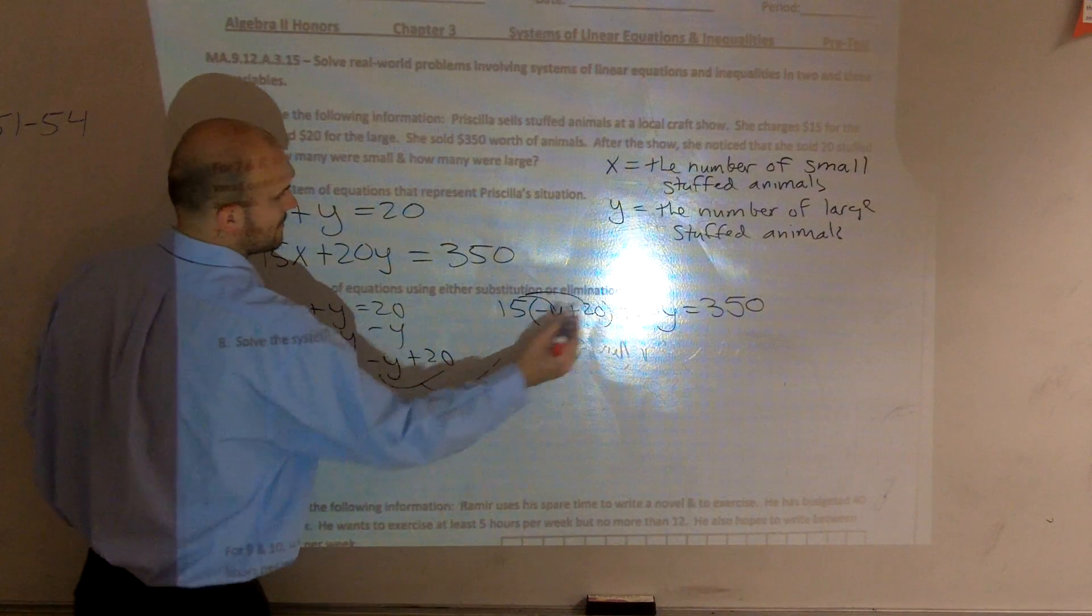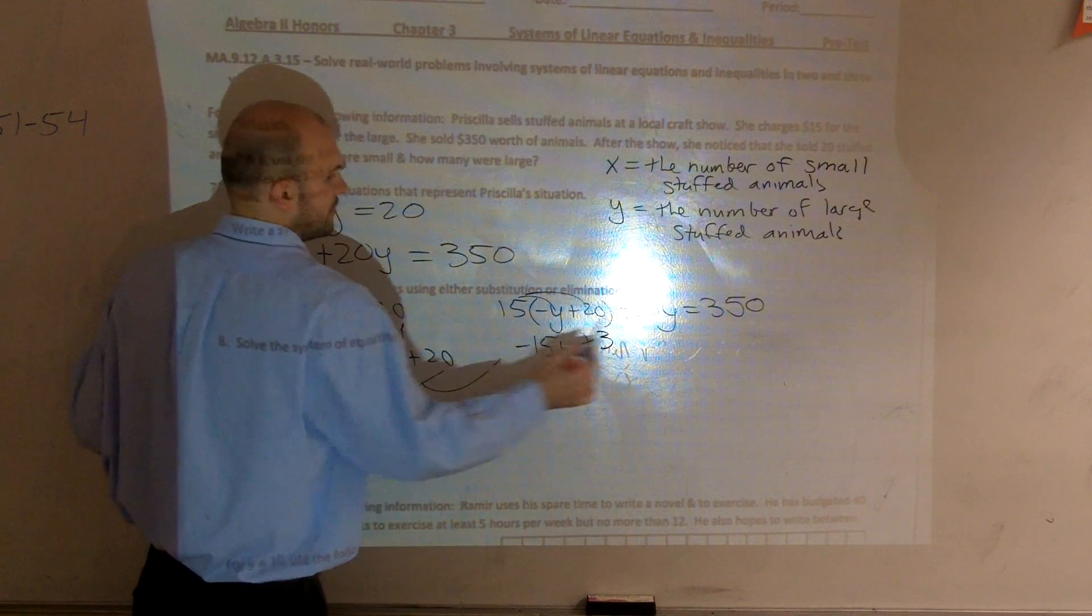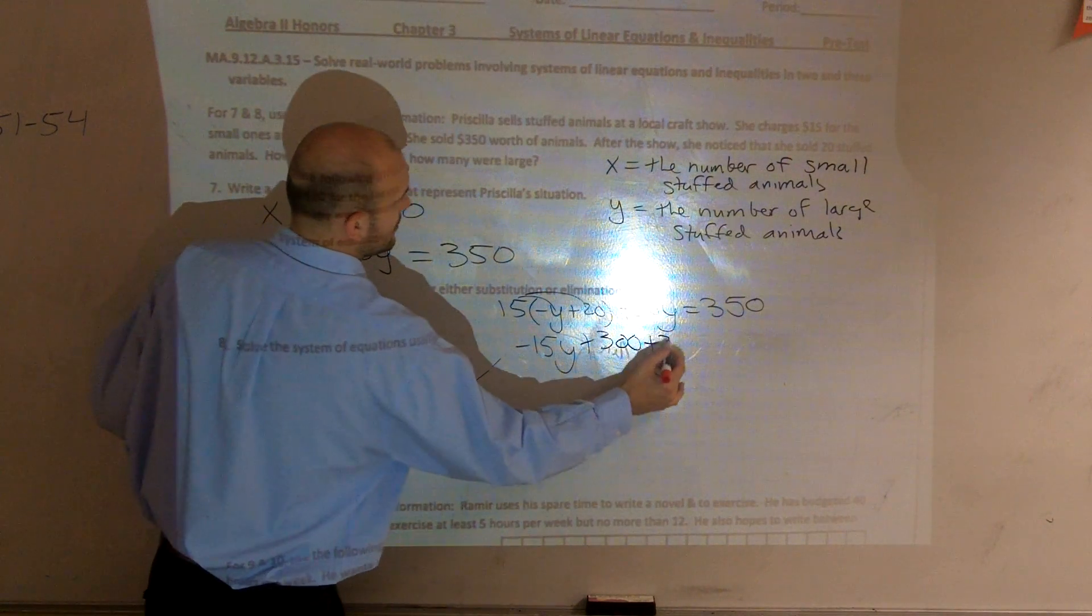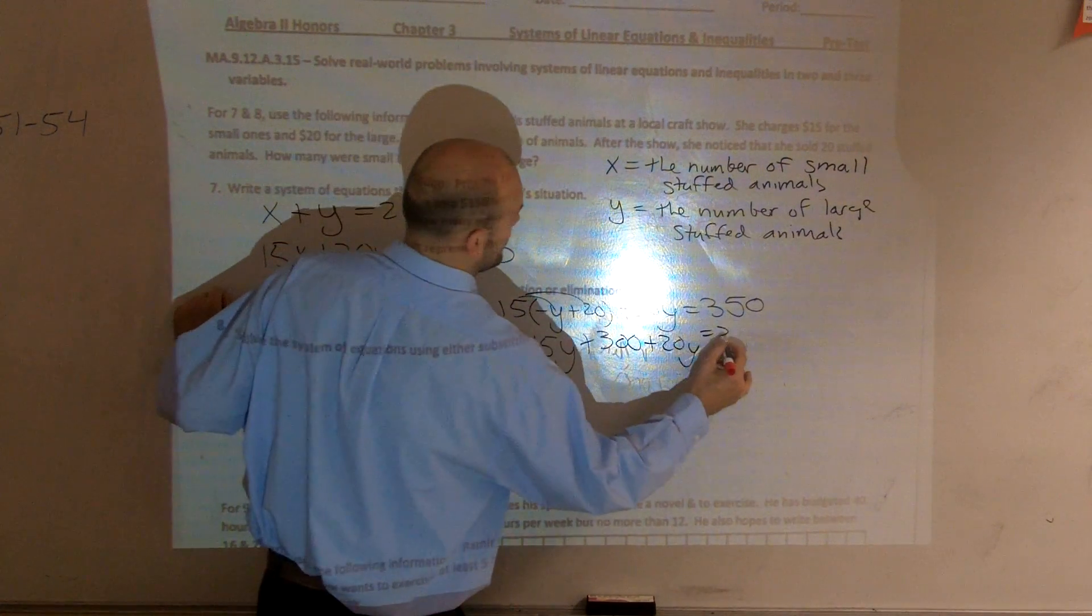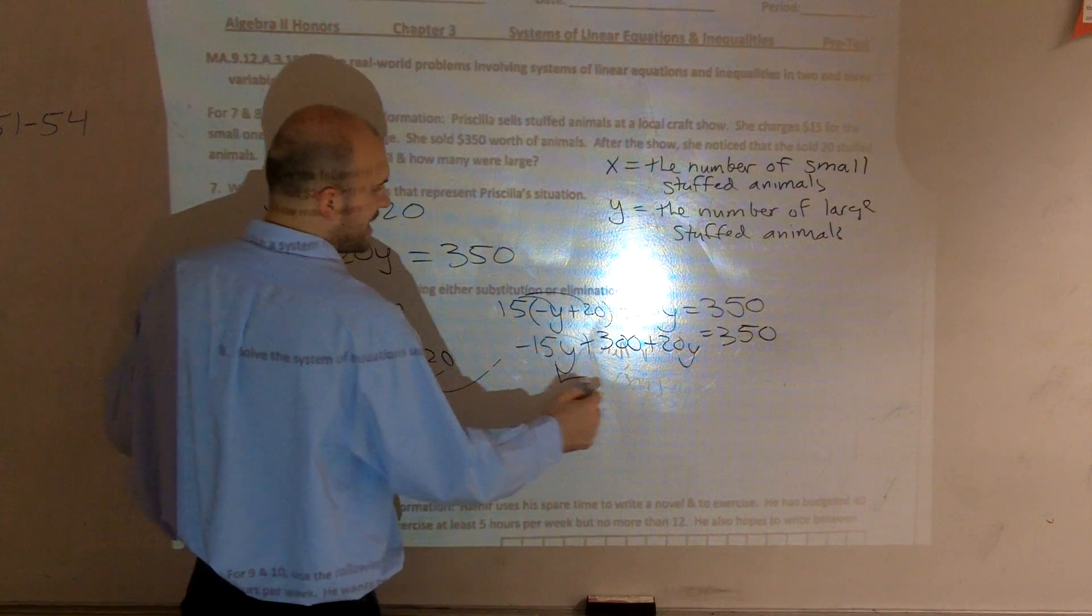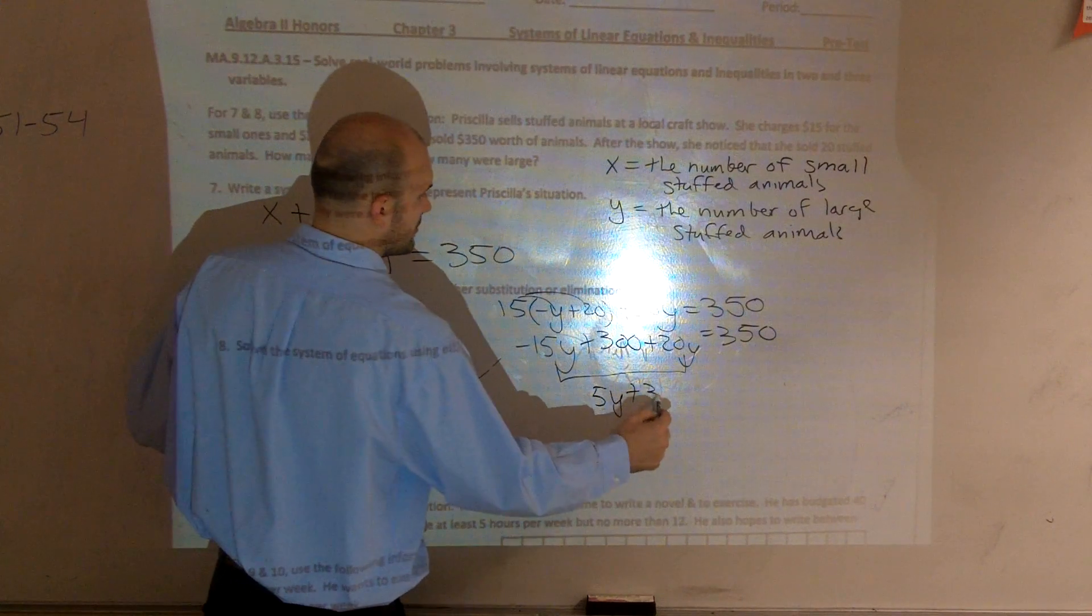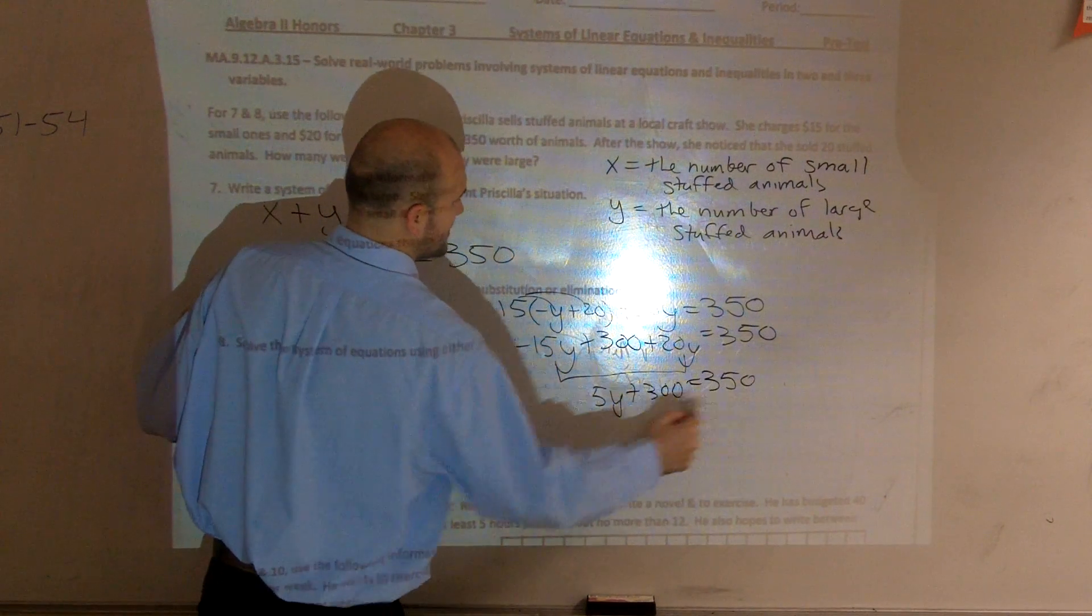Just distributive property. Negative 15y plus 300 plus 20y equals 350. We can combine our like terms. So, we get 5y plus 300 equals 350.